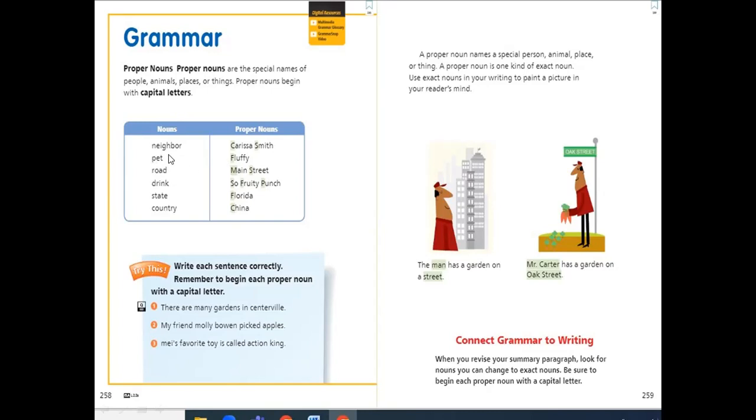Pet. Pet can be a dog, a cat or anything. But if I use the special name for the pet like Fluffy, this is a proper noun. Road, Main Street. This can be any road, but here I use the special name of the street, Main Street.